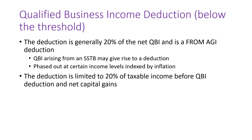The qualified business income deduction, if you are below the threshold, is generally 20% of the net QBI, and it is a from-AGI deduction.